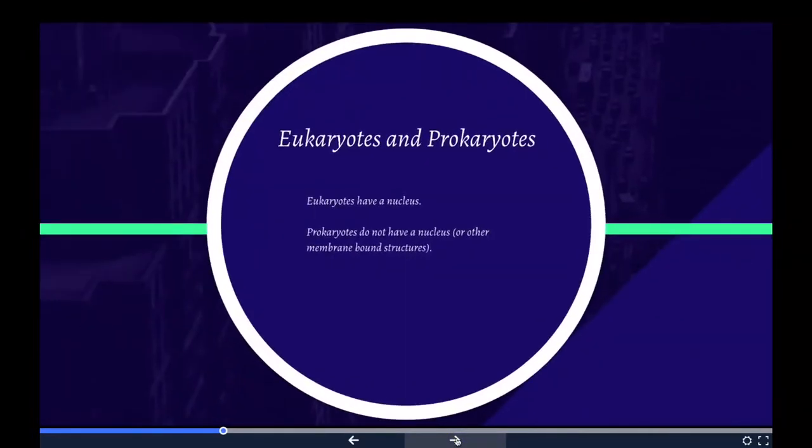Now we get to eukaryotes and prokaryotes. A eukaryote is any organism whose cells have a cell nucleus and other organelles enclosed within membranes. That's really the important part - eukaryote means nucleus. The defining feature that sets eukaryotic cells apart from prokaryotic cells, like bacteria, is that they have membrane-bound organelles.